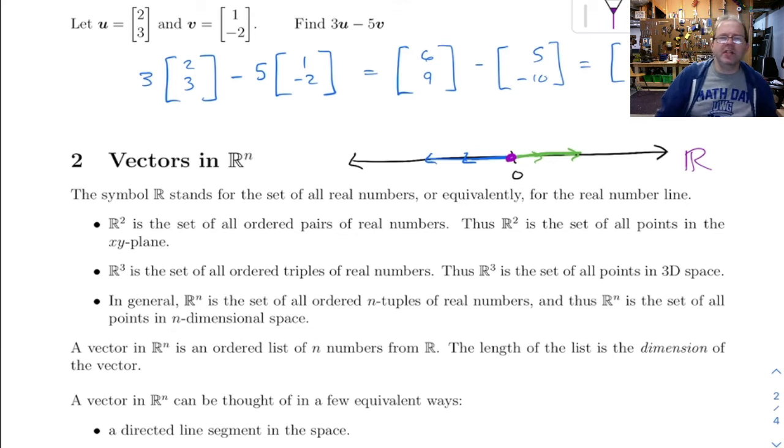Now, n-dimensional space gets difficult to think about once you get n bigger than 3, because n equals 1 is the real number line, n equals 2 is the plane, n equals 3 is 3D space. Beyond that, you can still think of it geometrically, but it's difficult.